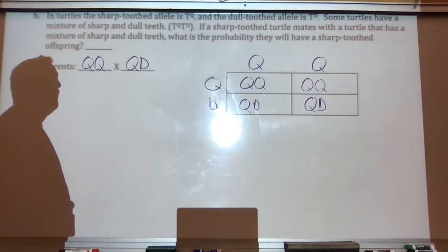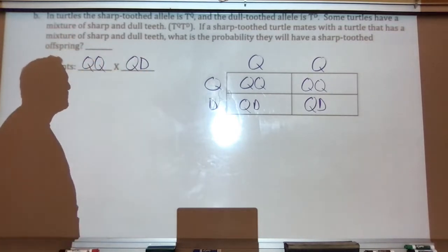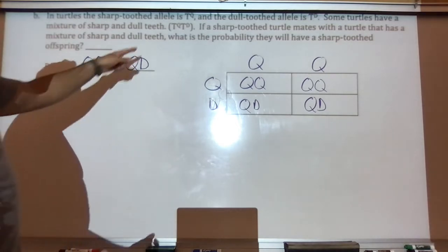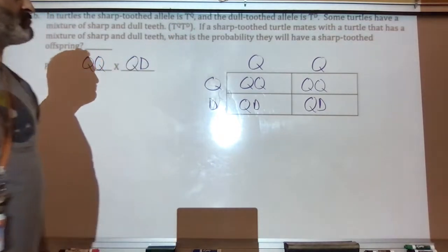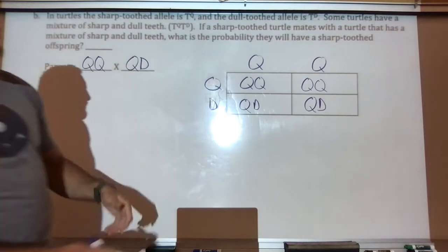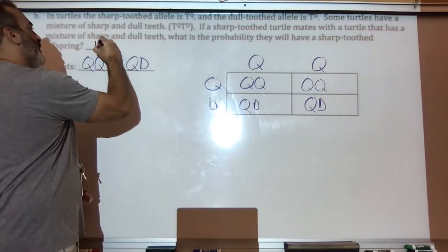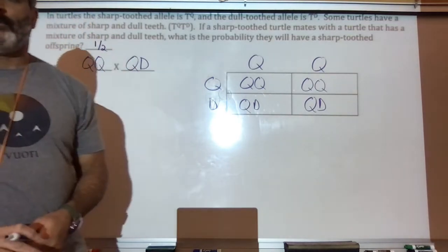Then, let's answer it. What's the probability they will have a sharp tooth offspring? Sharp teeth are back. Now, here, aren't sharp teeth two Qs? Two Qs are sharp teeth. To have sharp teeth, how many of them have sharp teeth? Two out of four, which becomes one half.